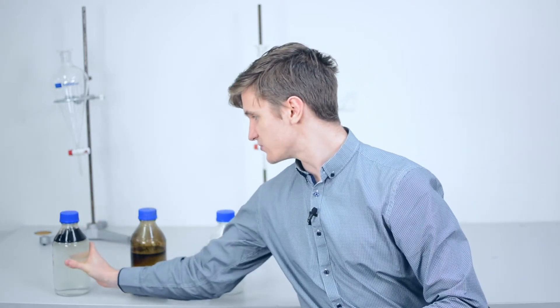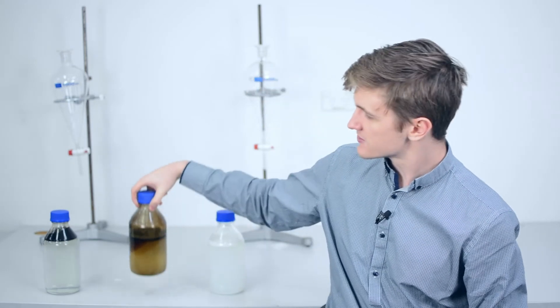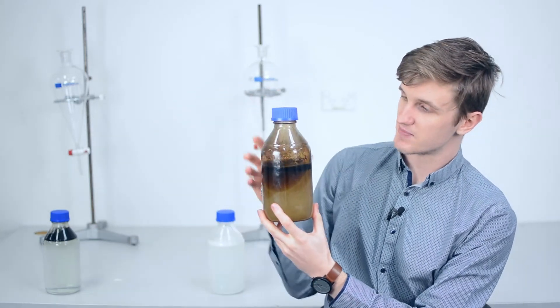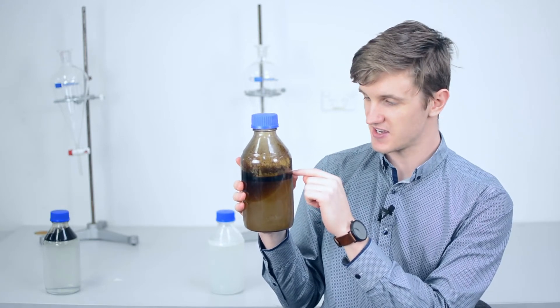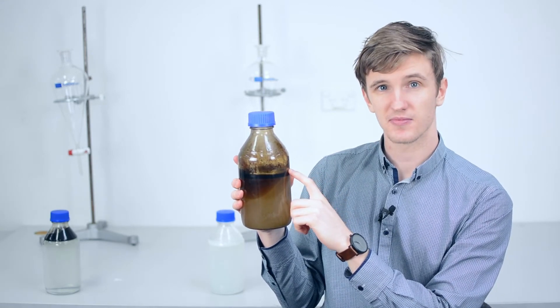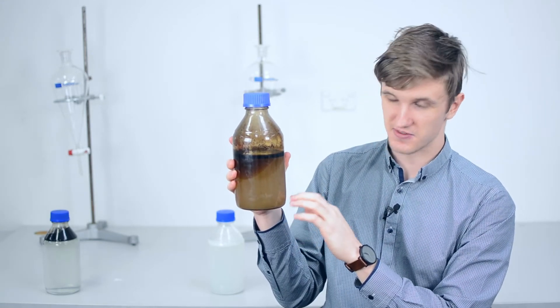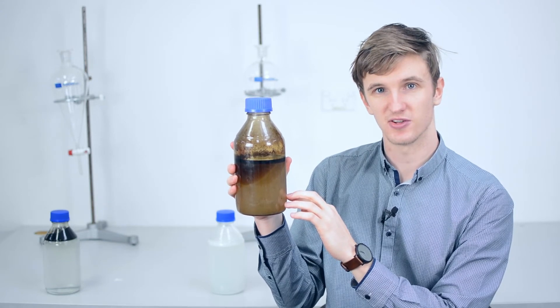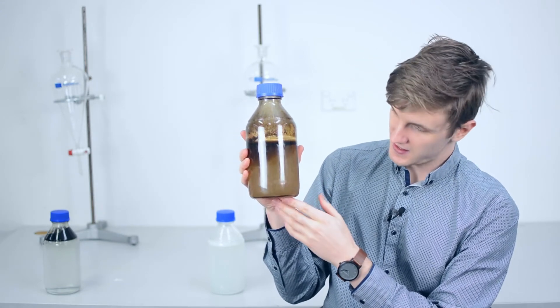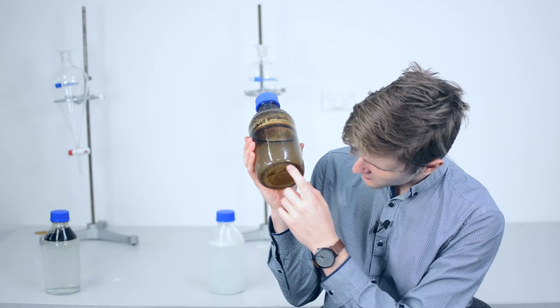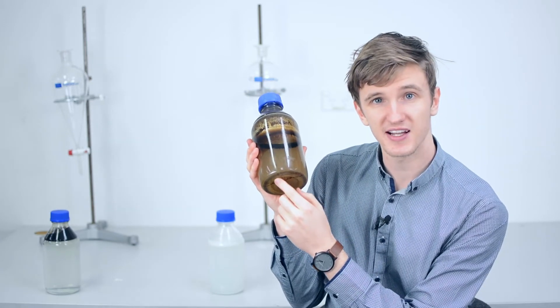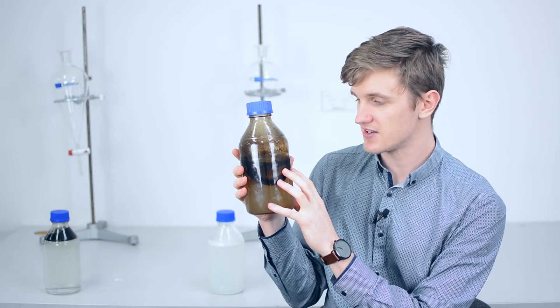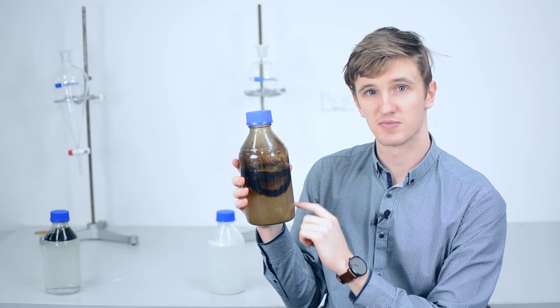This next sample comes from a mine site and it's basically got everything. We can see a layer of free oil on top, and throughout the mixture it's very cloudy, which means there's going to be a lot of emulsified oil. If you look at the bottom you can also see some heavy oil has settled out, and when we analyzed it we found that there was some dissolved oil.